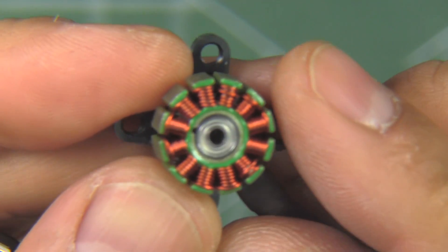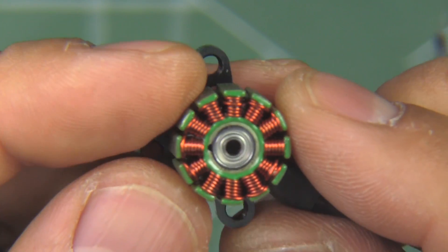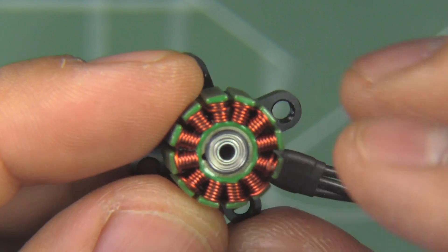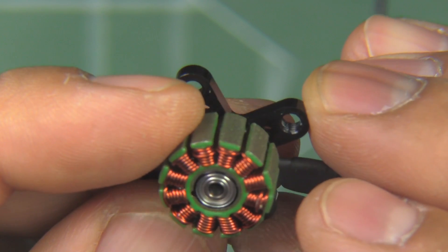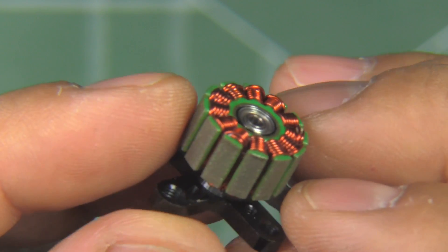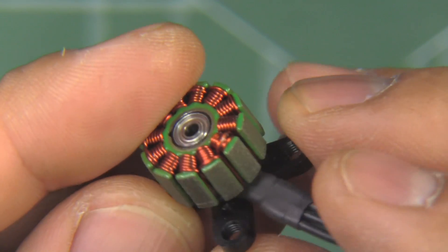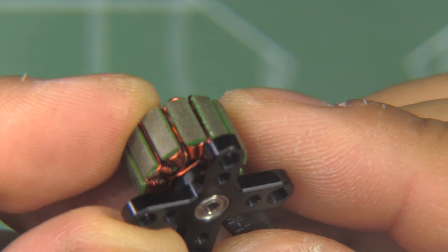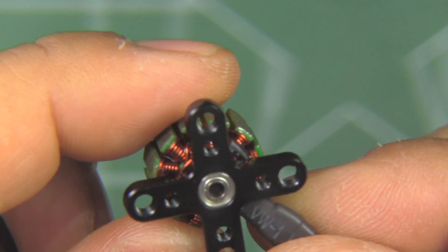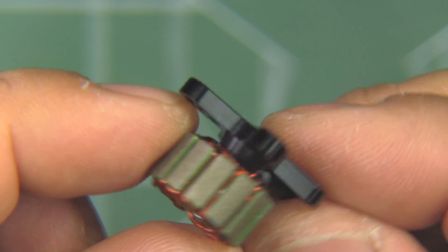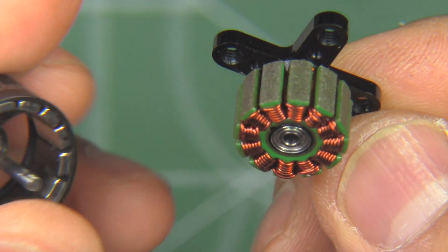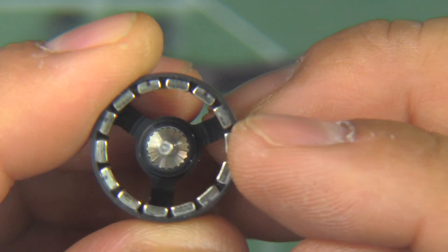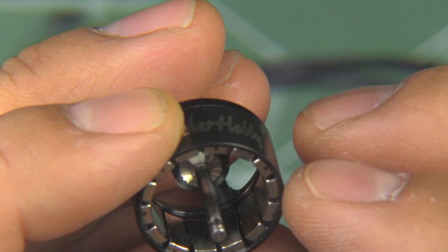And, as usual, windings from Brother Hobby are always some of the best that you'll see. Very nice and neat. Looks like single strand wire there. So, pretty good. That'll support pretty good load. And the usual bearings for this size motor. And 2 millimeter shaft.